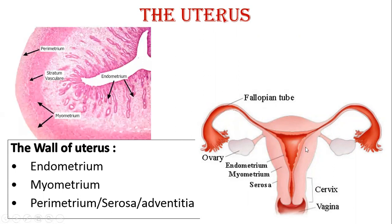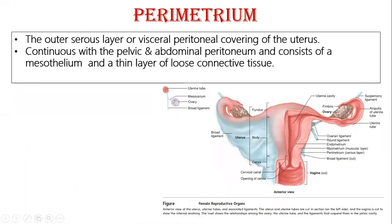If you take a cut section of the uterus and do processing and H&E staining, you will find the cavity inside as an empty space. Just outside the cavity will be your endometrium, then the muscle layers, and then the outermost perimetrium. This uterus is covered by a layer of peritoneum, so the outer serosa layer or visceral peritoneal covering of the uterus is the perimetrium.